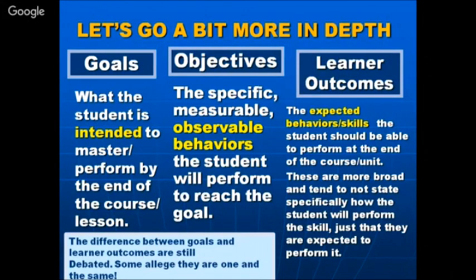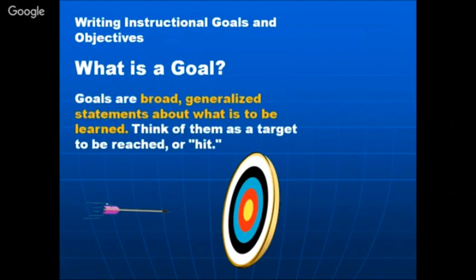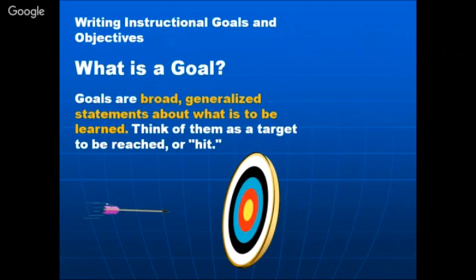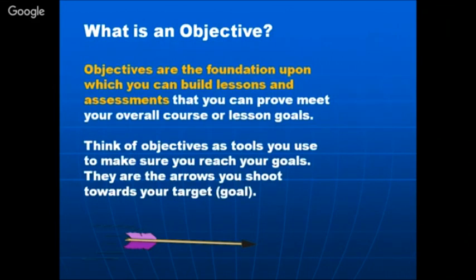There is still debate about the difference between goals and learner outcomes, but the clear-cut difference is this: goals are broad, generalized statements about what is to be learned — think of them as a target to be reached, like hitting the center of a yellow circle. Objectives are the foundation upon which you build lessons and assessments that meet your overall course or lesson goals.